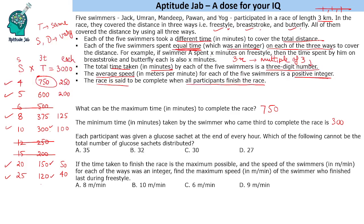Each participant was given a glucose sachet at the end of every hour. We calculate sachets for each possible time: 750 minutes gives 12 sachets, 600 gives 10, 375 gives 6, 300 gives 5, and the two shorter times (150 and 120 minutes) give 2 sachets each. Note: sachets are not given after finishing the race.